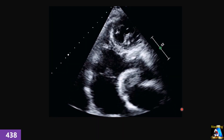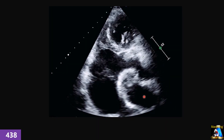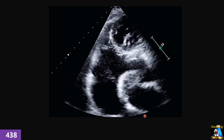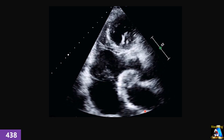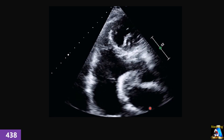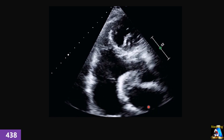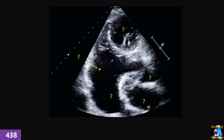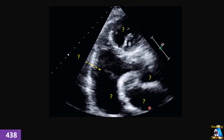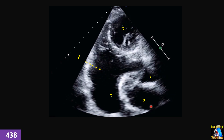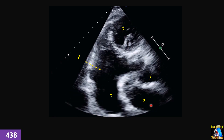Here we have another apical view. What view is this? When do we use this view? And what are those structures — can you name them?